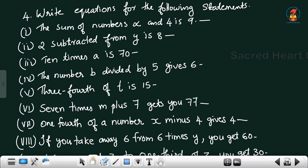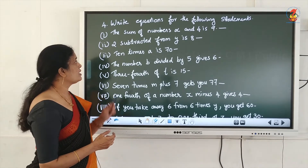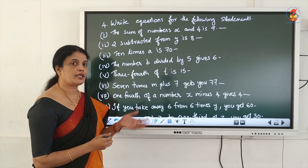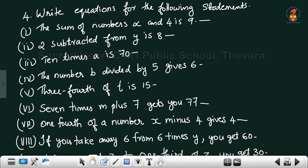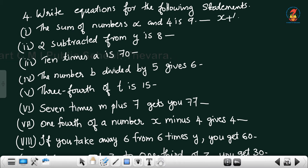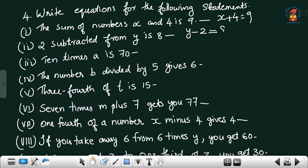Next question: Write equations for the following statements. The sum of numbers x and 4 is 9 — 'sum' means addition, so x + 4 = 9. Next: 2 subtracted from y is 8, meaning y − 2 = 8.